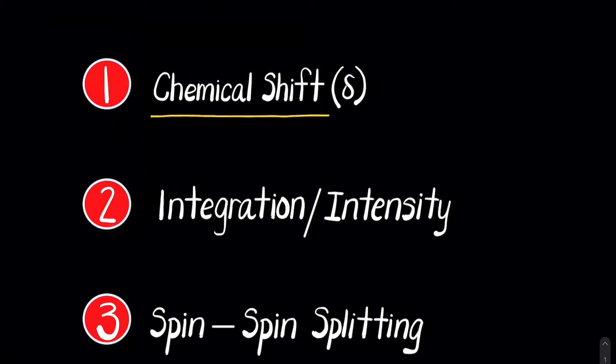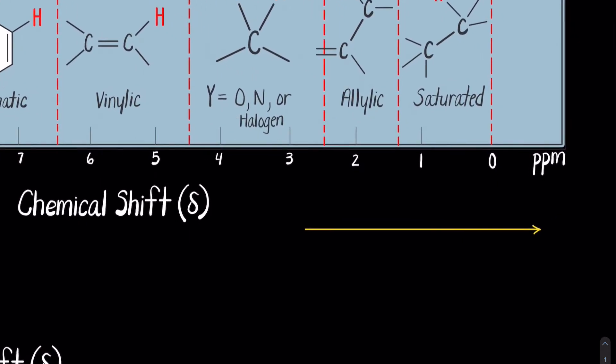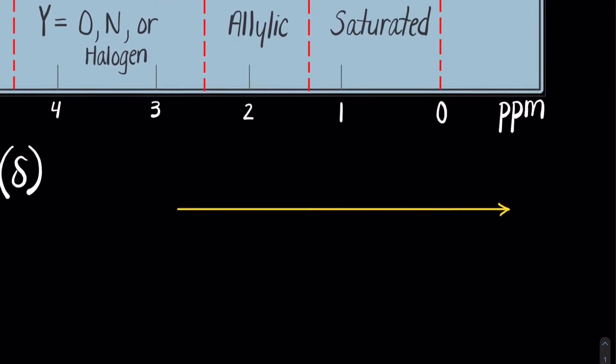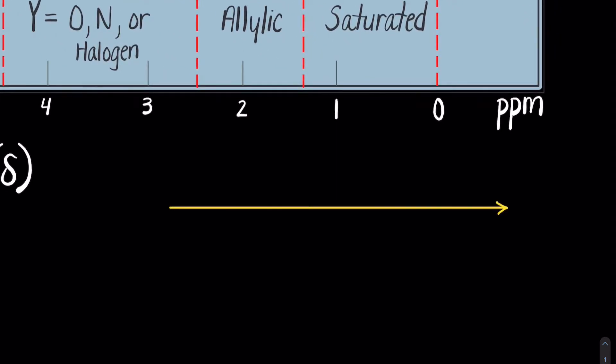So, chemical shift. Each electronically distinct H1 or carbon-13 nucleus in a molecule comes into resonance at a slightly different value of the applied field, thereby producing a unique absorption signal. The exact position of these peaks is called the chemical shift. The chemical shift is measured in parts per million, and spectrums go from left to right — upfield is towards the right, and these peaks exhibit more shielding.